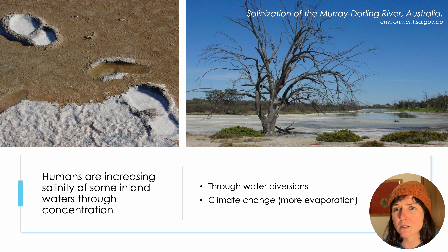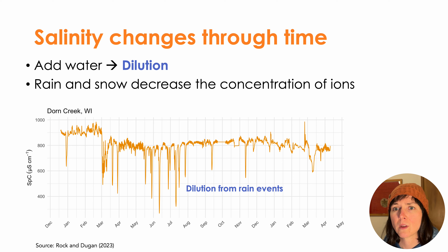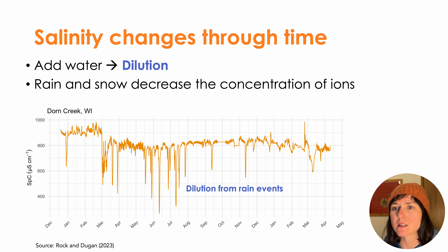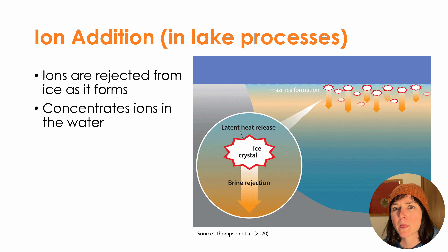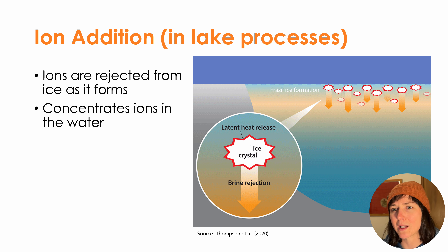Humans are also altering natural salt concentrations in inland waters through the diversion and withdrawals of freshwater rivers. Diversions of freshwater river inputs concentrates the remaining lake water, increases salinity, and therefore can drastically change freshwater ecosystems. Conversely, salinity decreases via dilution. Lakes and rivers are diluted by freshwater inputs. Here's a time series of specific conductance in Dorn Creek in Wisconsin showing large downward troughs — big negative peaks — in specific conductance caused by rain events. One of the most curious in-lake processes affecting salinity is the formation of lake ice. When water begins to crystallize into ice, dissolved ions are actually rejected into the surrounding water and not incorporated into the ice lattice. In winter, this can temporarily, and sometimes significantly, increase ion concentrations and specific conductance in shallow water bodies.